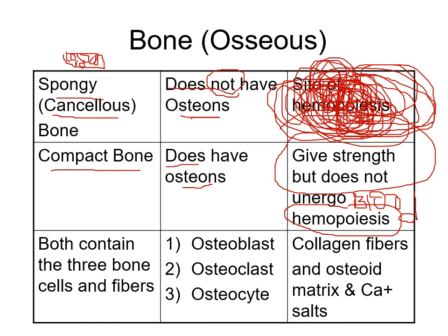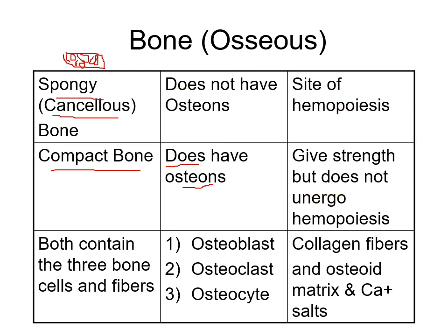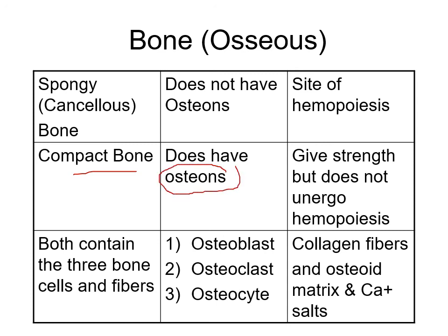Cancellous bone is where hemopoiesis - blood formation - occurs; the cells are surrounded by blood like a big vat. In compact bone you have to pipe blood in through the Haversian system. Both spongy and compact bone have three cell types: osteoblasts (young), osteocytes (mature parenchymal cell), and osteoclasts. Both also have collagen fibers and an osteoid matrix with calcium salts.